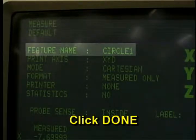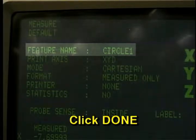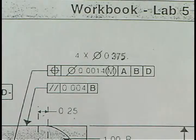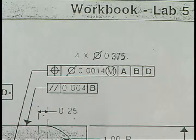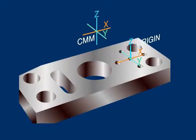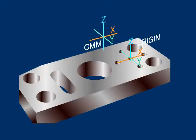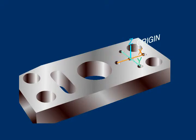Click Done to complete the process and return to the main menu screen. To complete the alignment, the computer must be told to use these reference surfaces as the axes for this next set of measurements. This will align the zero point on the CMM with the zero point on the workpiece as specified by the print.